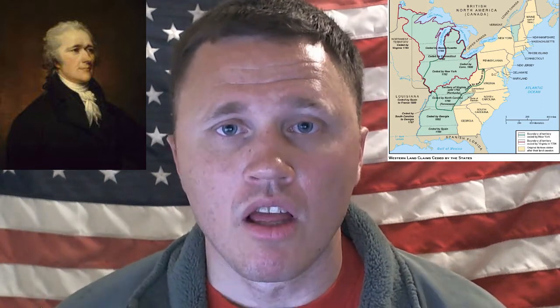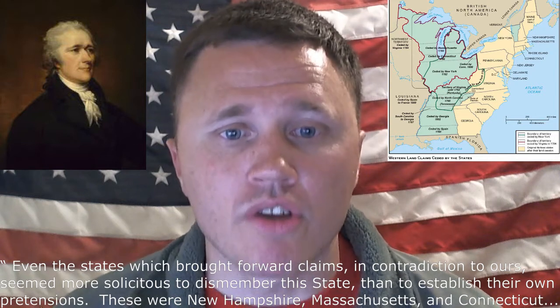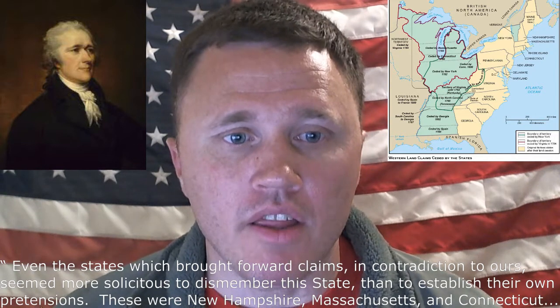Hamilton also references a similar dispute between New York and Vermont, where a level of opposition arose which, had the Confederacy dissolved, might have eventually led to a conclusion by force of arms from New York. This general opposition took two forms: one was the jealousy about the future power and influence of New York, and the second was the interest of certain influential individuals from other states in their own claims of land within New York itself. To quote Hamilton: 'Even the states which brought forward claims in contradiction to ours seemed more solicitous to dismember this state than to establish their own pretensions.'